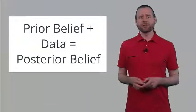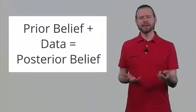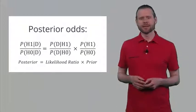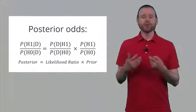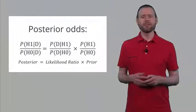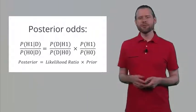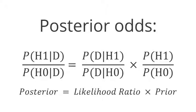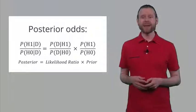It works quite straightforwardly. You have some prior belief, you have some data, and you combine these into a posterior belief. We can calculate posterior odds that the alternative hypothesis is true given the data, compared to the probability that the null hypothesis is true given the data. The posterior equals the likelihood ratio times the prior. So the likelihood ratio discussed in the previous lecture is an essential part of Bayesian probability calculations, but it is also combined with the prior.